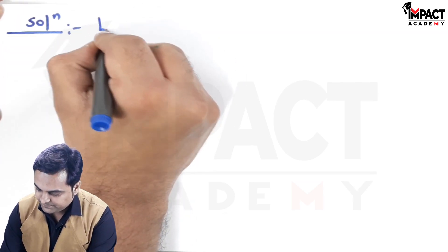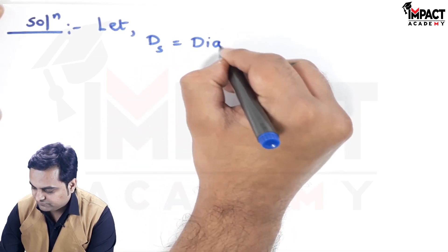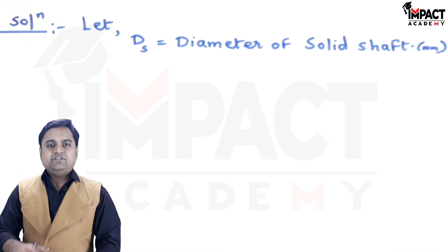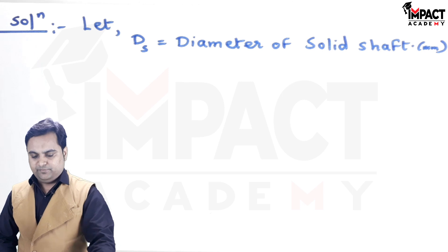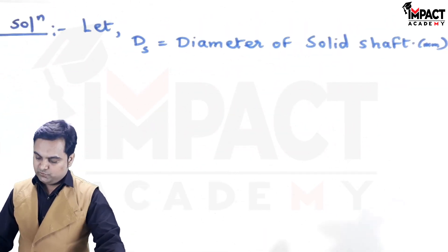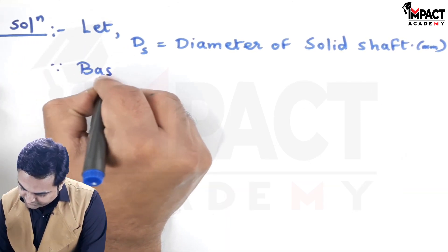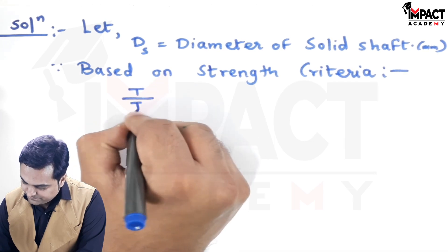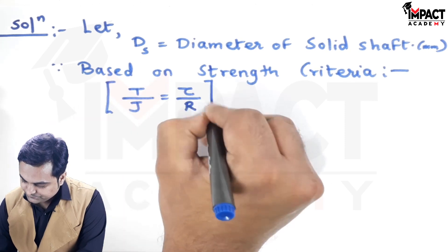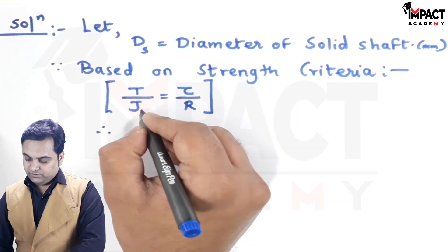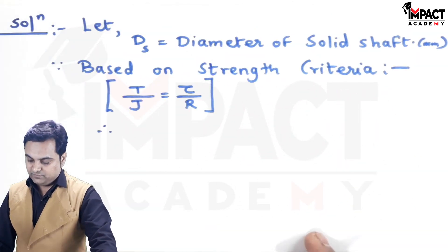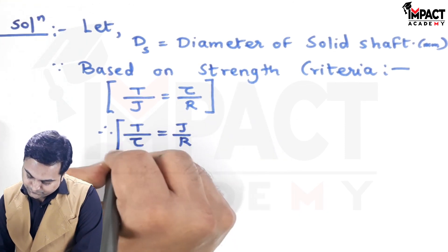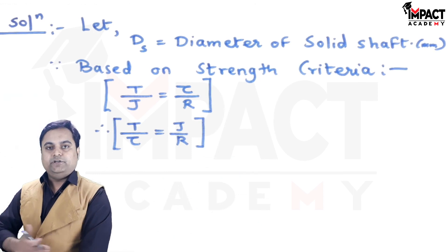Let capital D suffix S be the diameter of the solid shaft in millimetres. Since τ is given as the same, I will use the strength criteria. Based on the strength criteria, the torsion formula is T/J = τ/R, and therefore since torque T and shear stress τ are the same, this rearranges to T/τ = J/R.